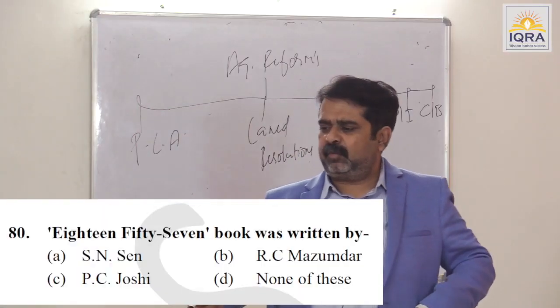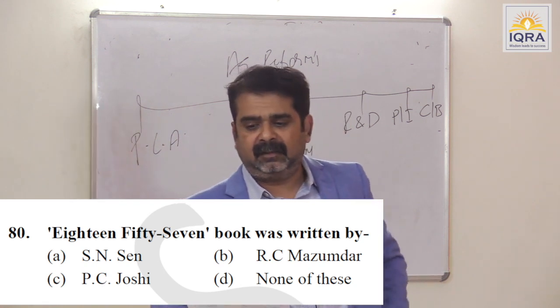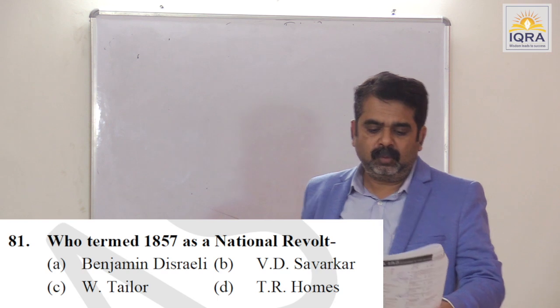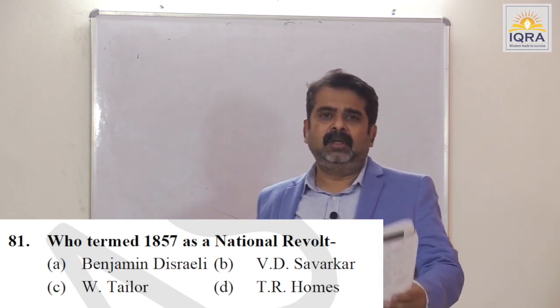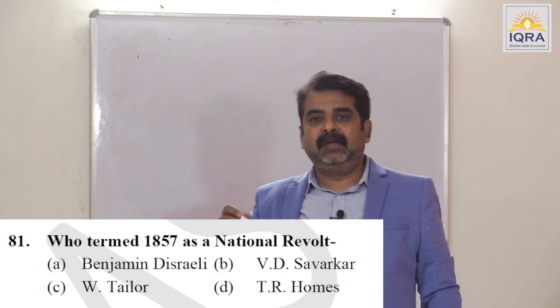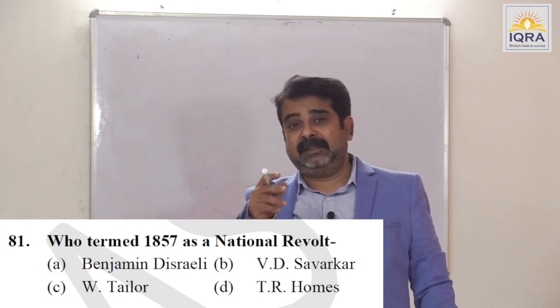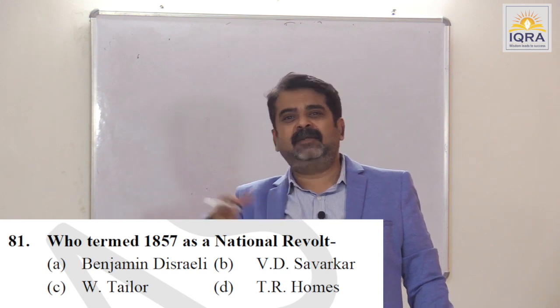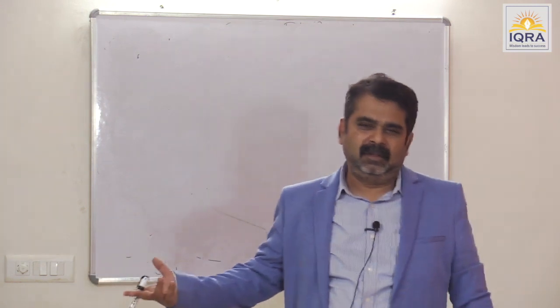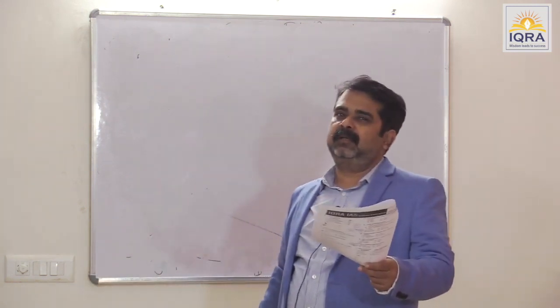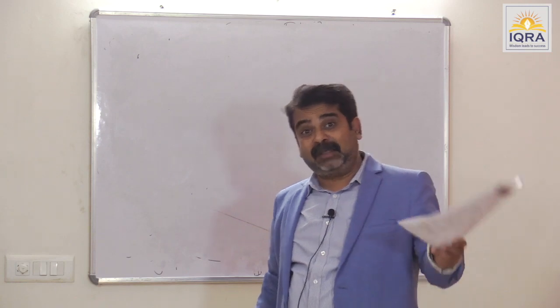The 1857 book was written by S.N. Sen. Who termed 1857 as a national revolt? Benjamin Disraeli. V.D. Savarkar called it the First War of Independence because he had to use it as a catalyst in the second phase of freedom struggle. Benjamin Disraeli, as Prime Minister of Britain, said it was a national revolt to give an excuse to take over India from the company — the people of India did not want to live under the patronage of the company, and this became an important point for the transfer of power. Answer is A.